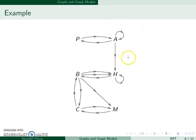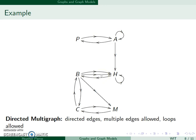I can also add in loops and add in these multi-edges, and I get a directed multigraph. This one has directed edges, we allow multiple edges, and we allow loops.